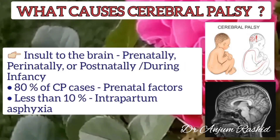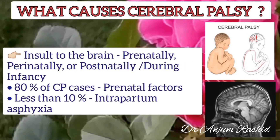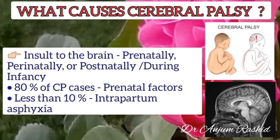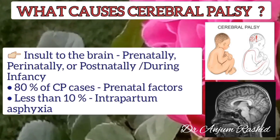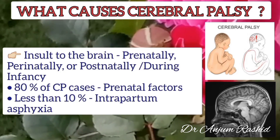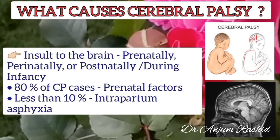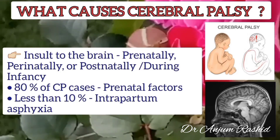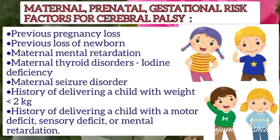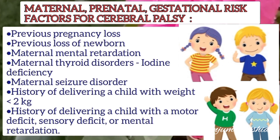The insult to the child's brain can occur prenatally, perinatally, or postnatally during infancy. 80% of the cases are due to prenatal factors and less than 10% are due to intrapartum asphyxia. Maternal prenatal risk factors include previous pregnancy loss and previous loss of a newborn.